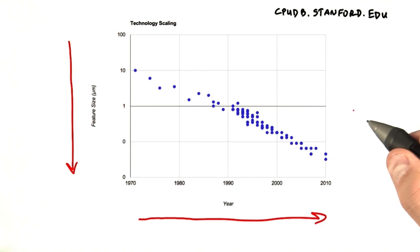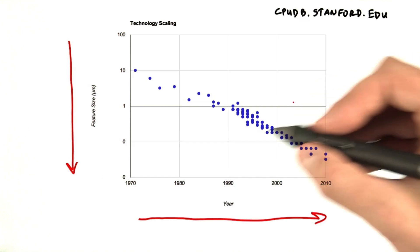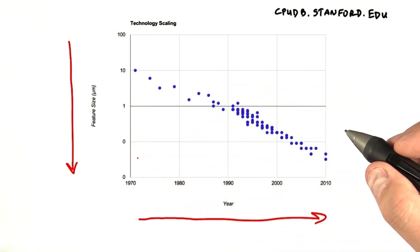So when you hear talk about a 45 nanometer process or 22 nanometer, that's what we're referring to, the feature size. So we see that it's consistently going down over time.